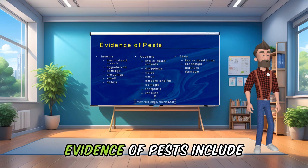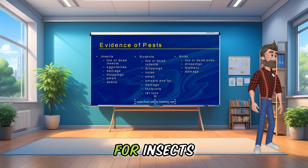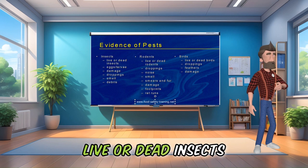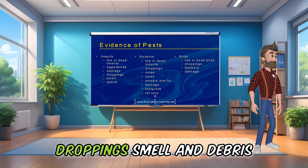Evidence of pests — for insects: live or dead insects, eggs or larvae, damage, droppings, smell, and debris.